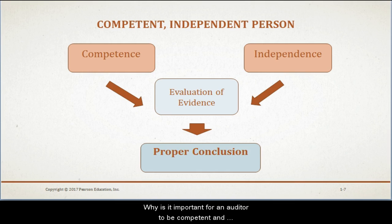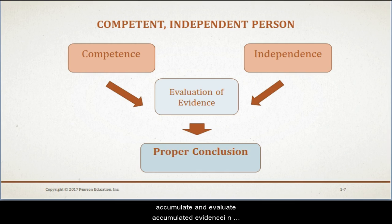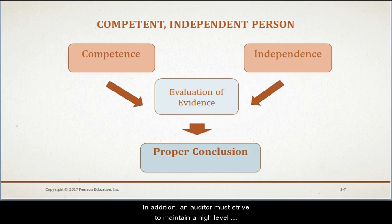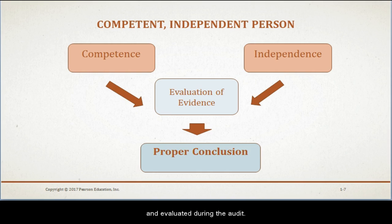Why is it important for an auditor to be competent and independent? A competent auditor is an individual who is not only qualified to understand the established audit criteria, but also has the ability to know the types and amounts of evidence to accumulate and evaluate in order to reach a proper audit conclusion. In addition, an auditor is expected to maintain a high level of independence to keep the confidence of users relying on the auditor's conclusion based on unbiased audit evidence.